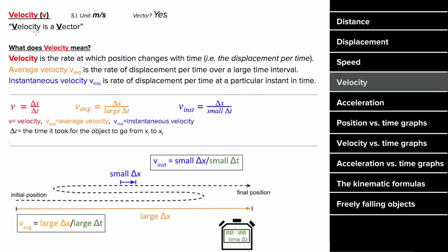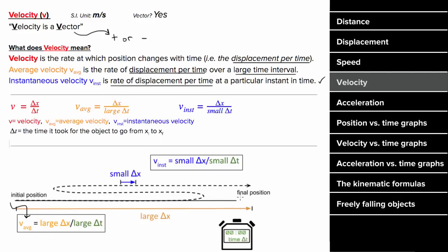What does velocity mean? Velocity is another way to determine how fast something's moving, but this one's a vector, which means velocity can be positive or negative. Velocity is defined to be the displacement per time. You could define the average velocity as the displacement per time over a large time interval, or the instantaneous velocity as the rate of displacement per time at a particular moment. For the average velocity, you take the displacement for the entire trip and divide by the time it took.